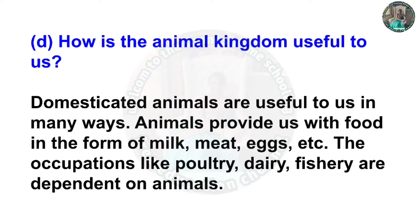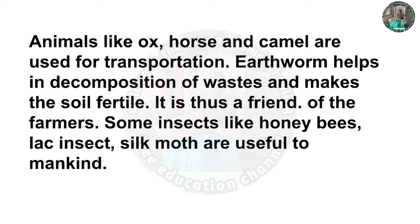Question D. How is the animal kingdom useful to us? Domesticated animals are useful to us in many ways. Animals provide us with food in the form of milk, meat, eggs, etc. The occupations like poultry, dairy, and fishery are dependent on animals. Animals like ox, horse, and camel are used for transportation. Earthworms help in decomposition of waste and make the soil fertile; they are thus a friend of the farmer. Some insects like honeybees, lac insect, and silk moth are useful to mankind.